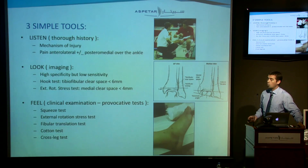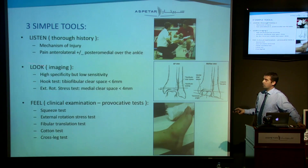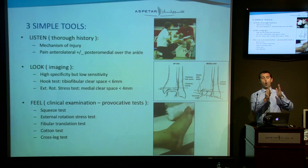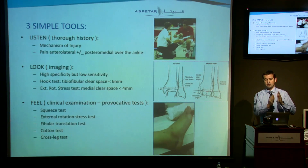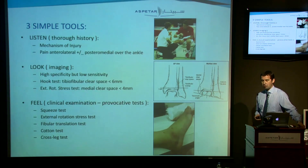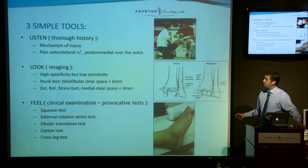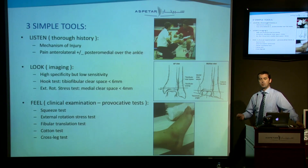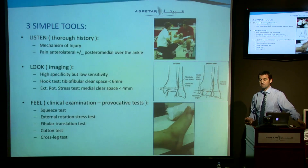We look — we have special imaging: x-ray, ultrasound, MRI. We can identify the clear spaces — is it opening or not? It's not that easy, but at least it supports us in our algorithm towards a solution. And of course we feel — we do provocative tests in order to know whether this is an unstable joint or not.